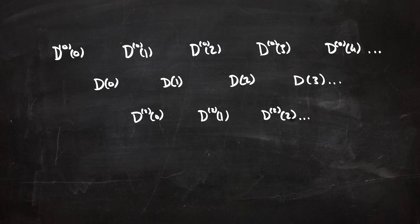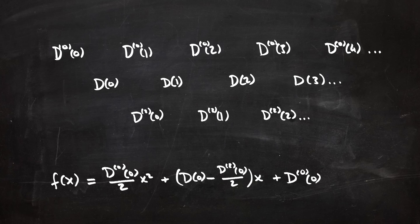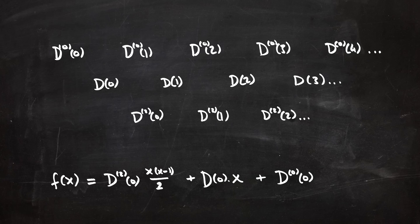If the second differences are constant, we can solve the quadratic polynomial. If we do that, we get this formula, which is how I solved my example before. But we could rewrite that formula in terms of the differences, so we get this instead. And this says d two of zero times x, x minus one over two, d of zero times x, plus d zero of zero. And this is called Newton's forward difference formula.